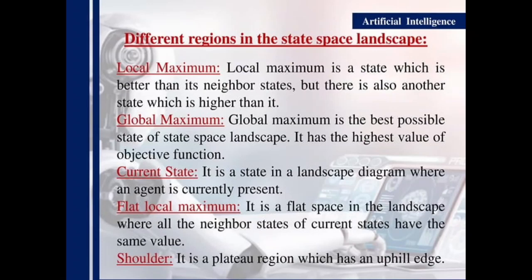Local maximum: a local maximum is a state which is better than its neighbor state, but there is also another state which is higher than it, which is the global maximum. Global maximum is the best possible state of the state space landscape, having the highest value of the objective function. Current state: it is the state in the landscape diagram where an agent is currently present. Flat local maximum: it is a flat space in the landscape where all the neighbor states of the current state have the same value.